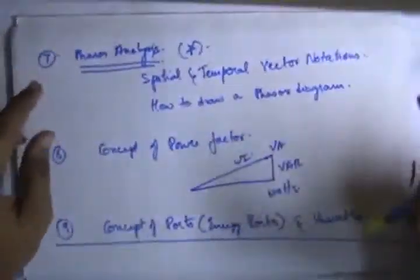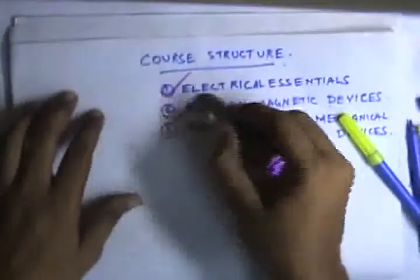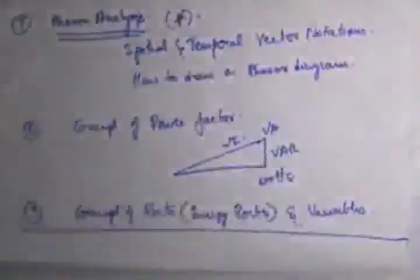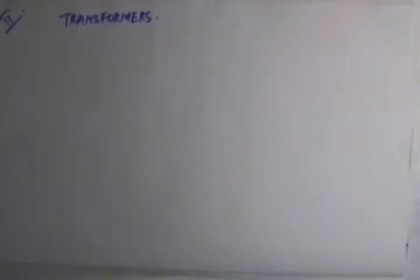We then move on to the next concept: Electromagnetic Devices. In Module 2, we are going to discuss transformers. We will learn about transformer basics, which include Faraday's Laws, the operation of a transformer, representation of a transformer and phasor diagrams, and the differences between practical and ideal transformers, along with the various phasor diagrams included in the theory of transformers.